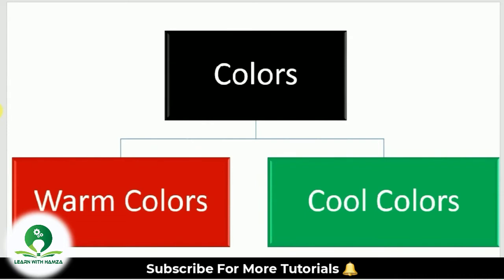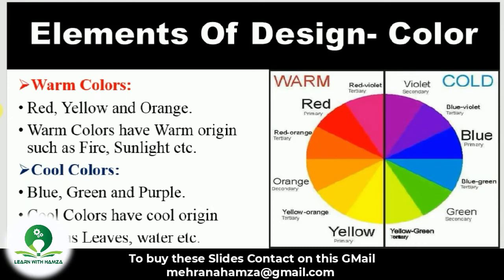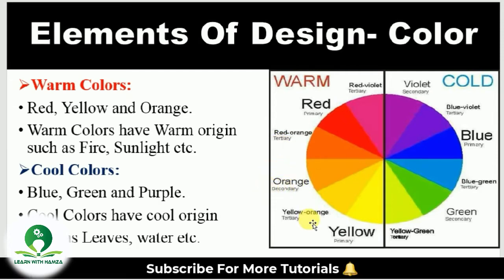There are basically two types of colors: warm colors and cool colors. Warm colors are those which have a warm origin, such as fire and sunlight. Warm colors are red, yellow, and orange. If we cut the color wheel into two portions, the left-sided portion consists of warm colors — for example, red-violet, red, red-orange, orange, yellow-orange, and yellow all belong to warm color origin.